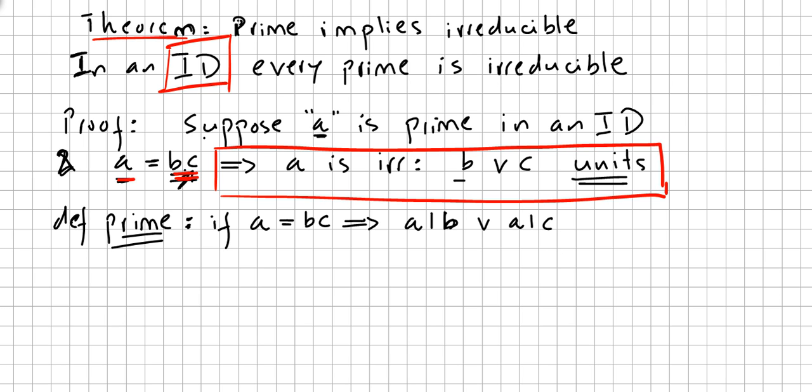And in this video we do the proof for that. So let us suppose we have a and a is a prime in an integral domain. Do not forget what prime means. You can check the previous video for that. So a prime number is a number that if we can factor a, the prime number, in bc, it implies that either a divides b or a divides c. That's what a prime is. And by hypothesis a is a prime.